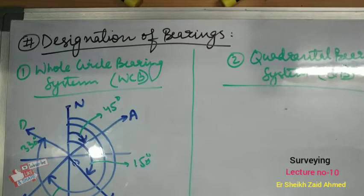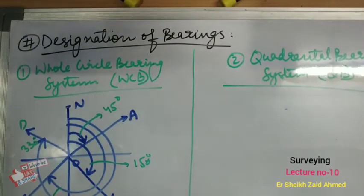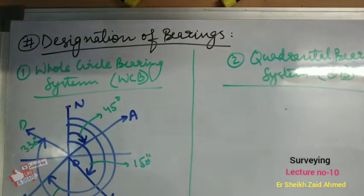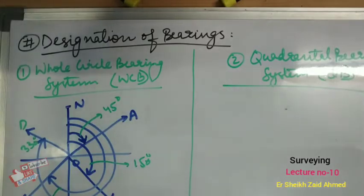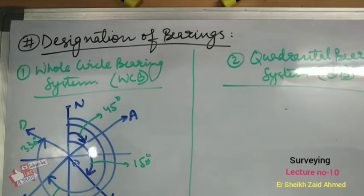Now moving on to the Quadrantal Bearing system. The bearing of a line is the acute angle which the line makes with the meridian. Thus the quadrantal bearing is measured from the north point or the south point, whichever is nearer. The quadrantal bearing of a line cannot be greater than 90 degrees — you have to remember that.